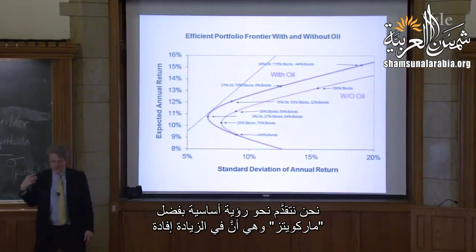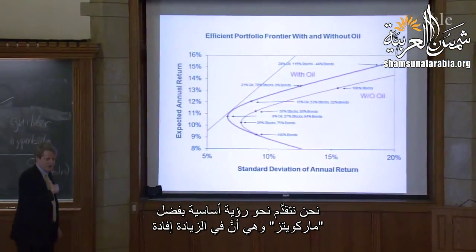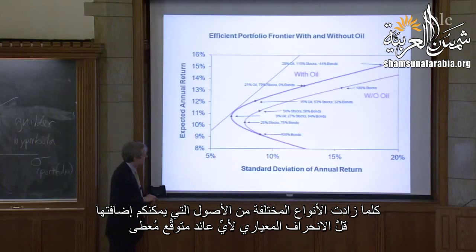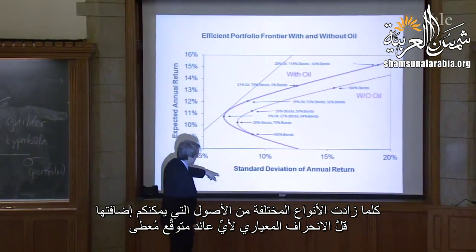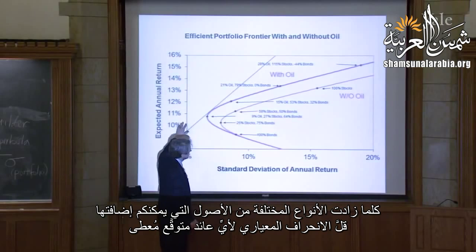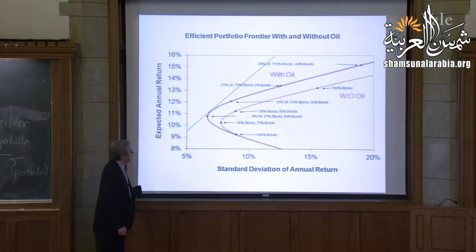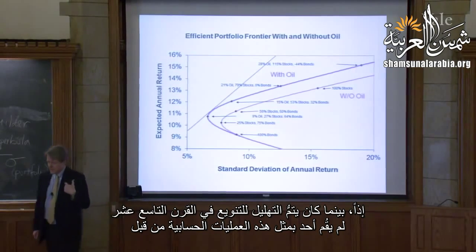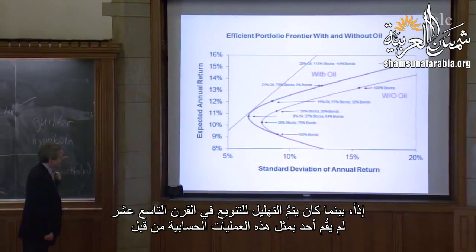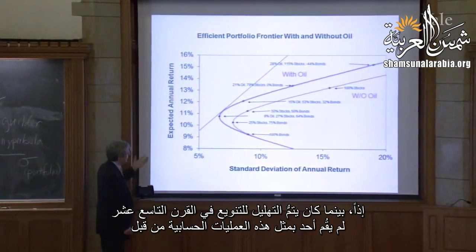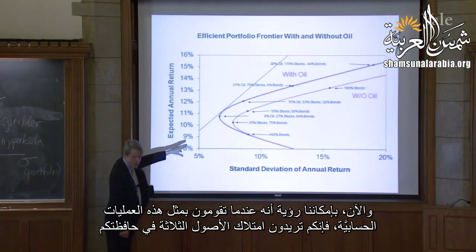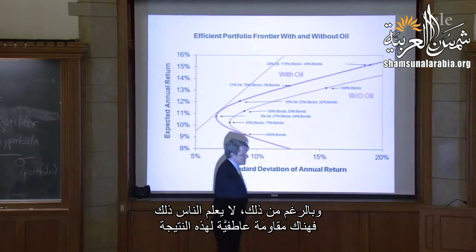You can see that when you add a third asset — oil — it's possible to bring the efficient portfolio frontier to the left. Because we've got another asset paying a good return that's not correlated very much with the stock market. We're spreading the risk out over more assets, putting more eggs in different baskets. We have a better choice set now — we can pick any point on that blue line. We shouldn't just have stocks and bonds; we should have stocks, bonds, and oil.